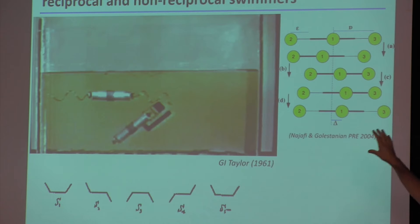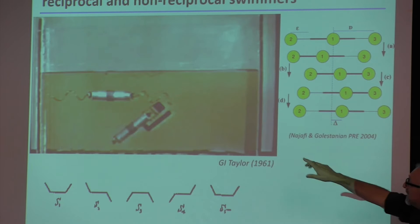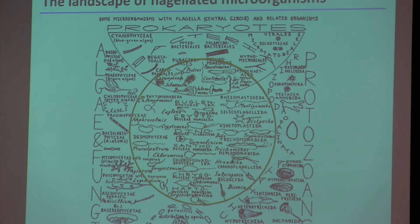These are three potential non-reciprocal swimmers that execute swimming motion at low Reynolds number. We're going to spend almost all of our time today on the first one — the helix. Now let's take a step into biology.